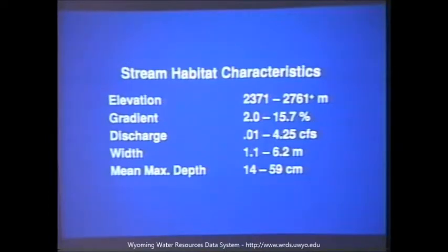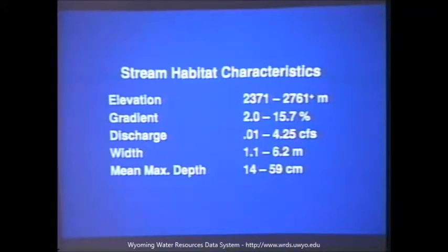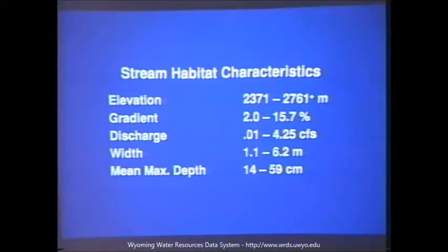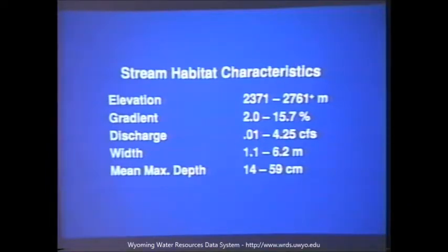To show that streams in the drainage were highly variable, here are some of the ranges of variables we looked at: elevations ranging between 2300 and 2700 meters, gradient between 2 and 15.7 percent, discharge between 0.01 and 4.25 CFS, width between 1.1 and 6.2 meters, and mean maximum depth between 14 and 59 centimeters. So there was a wide range of habitats available to cutthroat trout fry.